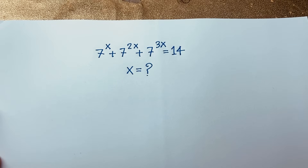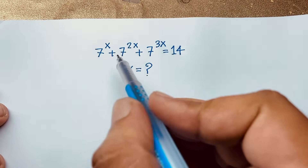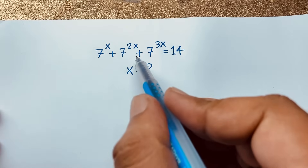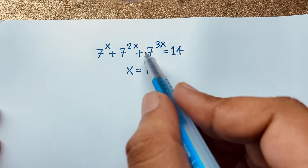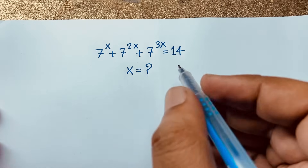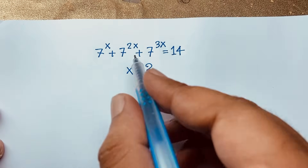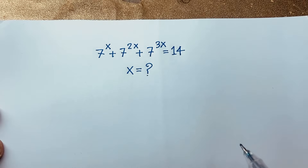Hello everyone, welcome to Russell's classroom. Today we are solving a nice exponential math problem, which is 7 to the power x plus 7 to the power 2x plus 7 to the power 3x is equal to 14. We will find out the value of x in this exponential math problem.